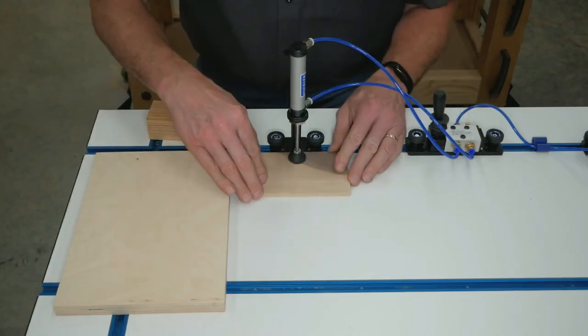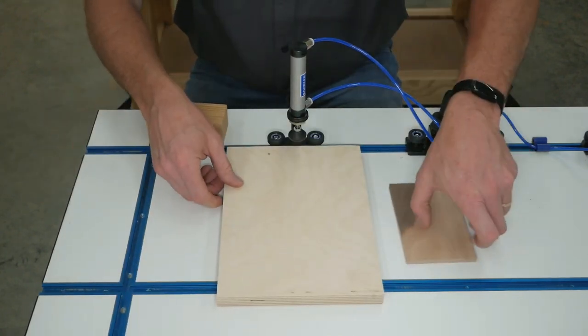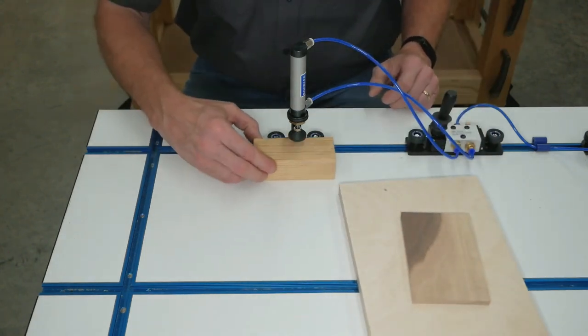The clamps slide into standard T-track for easy adjustability, and they can also be screwed down for more permanent clamping fixtures.